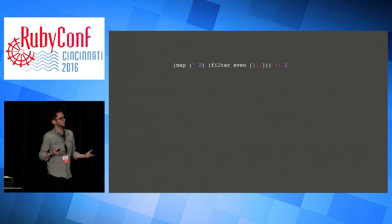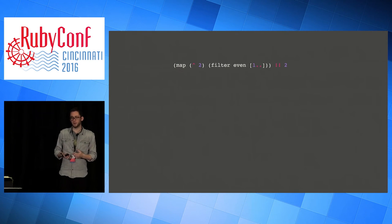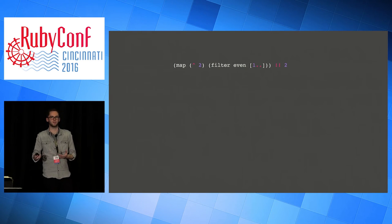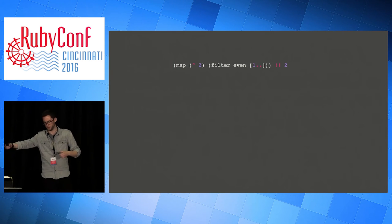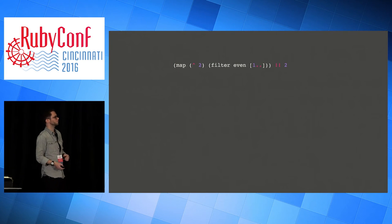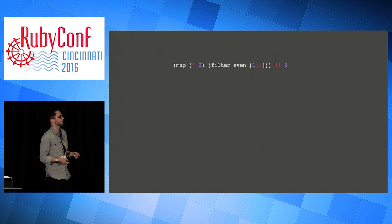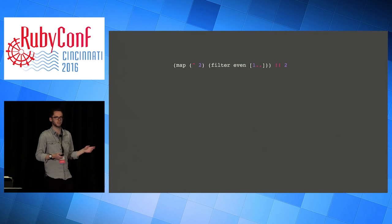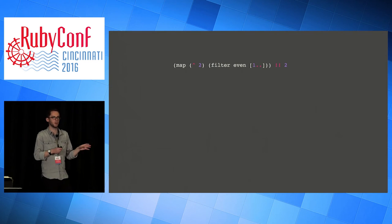In Ruby, you can't construct an infinite list. But if you could, the filter would take forever - you'd block on the filter running over the list and you'd never get to the map part. But in Haskell, this evaluates, and it does that in quite an interesting way by using these equations between structures.